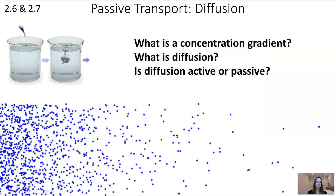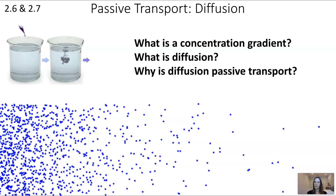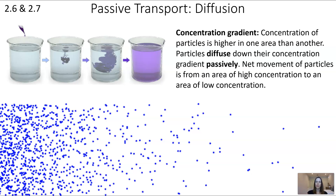Diffusion is passive transport. To understand diffusion, you need to know what a concentration gradient is. A concentration gradient is where the concentration — the amount of particles per volume — is higher in one area than another. Like when you put concentrated dye in water, those molecules move to areas of low concentration. Sometimes it's on opposite sides of a membrane. Either way, particles diffuse down their concentration gradient passively, with no energy input required.